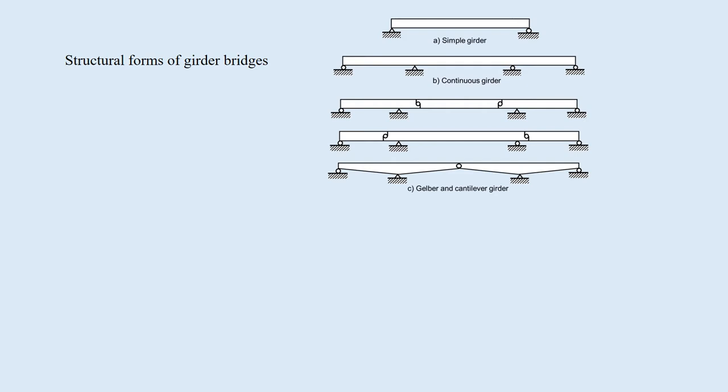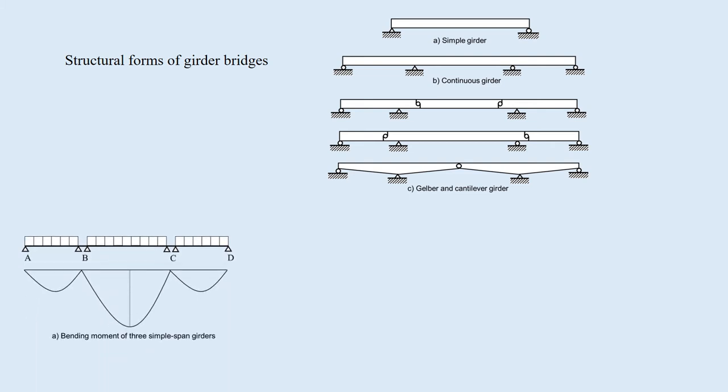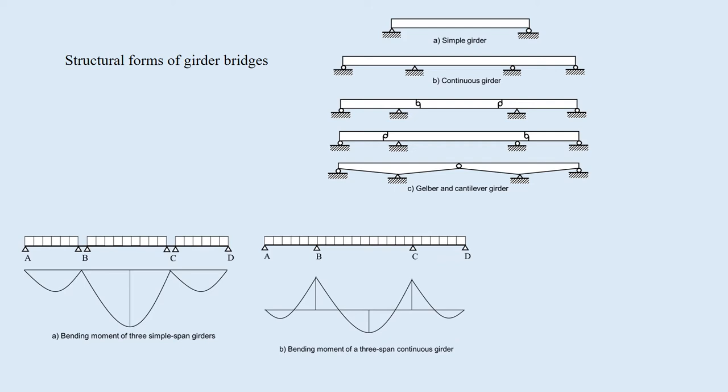The girder bridge is classified into three types by the support conditions. A: Simple girder — the girder is simply supported at both ends and it is a determinate structure. The bending moment is positive on the whole span. B: Continuous girder — the girder is supported at more than three points. It is an indeterminate structure. The bending moment is negative at the intermediate supports.